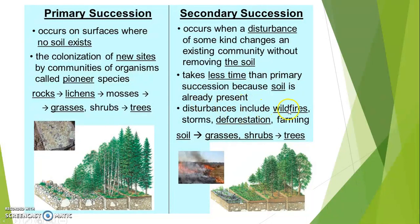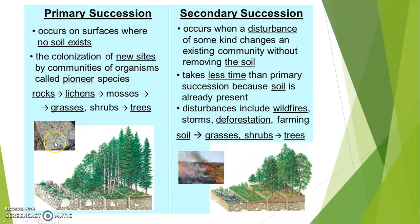Disturbances that trigger secondary succession include wildfire, storm, deforestation, and farming. The resulting sequence goes: grass, shrubs, then trees. You can see barren land where soil is not fully prepared, and there was previously some community that was replaced.